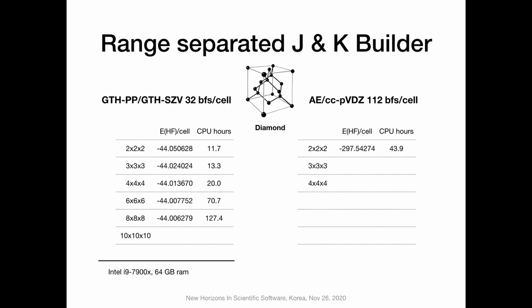The typical crystal basis has 32 basis functions per cell, and for cc-pVDZ it's 112 basis functions. I was apparently too ambitious to get all the results — the cost is still above my initial estimation. I wished to finish from 2×2×2 k-points to 10×10×10 k-points in the regular PBC basis, and at least three calculations for cc-pVDZ basis. By the time of the talk I only finished those numbers you see on the screen, all done on my desktop — a single CPU 10-core machine with 64 gigabytes of memory.